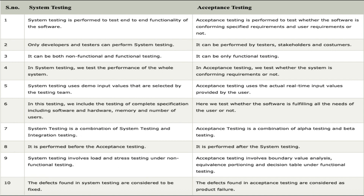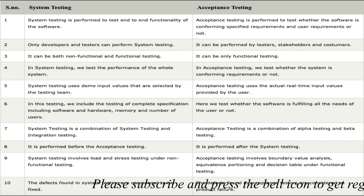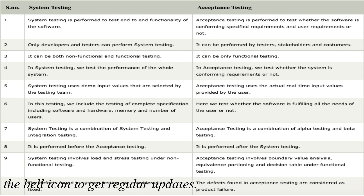Now we will see the differences between system testing and acceptance testing. Point one: system testing is performed to test the end-to-end functionality of a software, whereas acceptance testing is performed to test whether the software conforms to the specified requirements and user requirements.